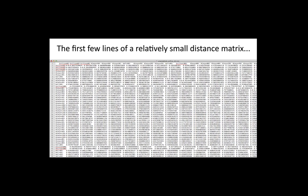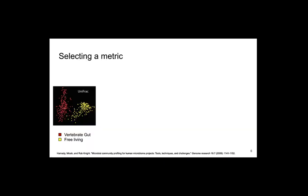As you might imagine, these distance matrices can get very, very large. This is a really small example — there's only about 50 samples in this study. So we don't usually actually look at the distance matrices themselves; we visualize them, which we will show you nearer to the end of this presentation. But you may be wondering: where do we get the numbers that go in this distance matrix? There are a lot of different metrics that you can choose to evaluate your beta diversity.